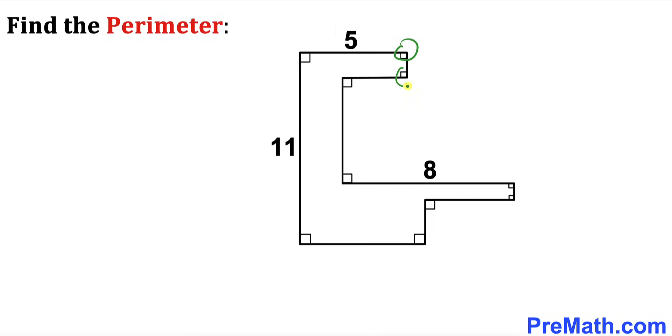all these angles as you can see over here are 90 degrees each, and now our task is to calculate the perimeter of this given shape.